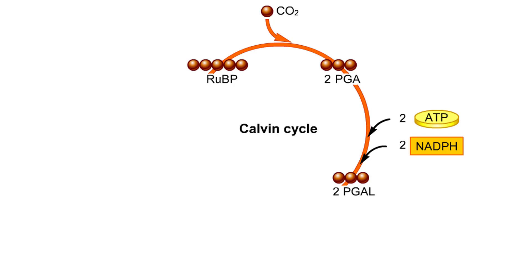The resulting intermediate, PGAL, is primed for reaction. After six molecules of carbon dioxide have been fixed, 12 PGAL form.